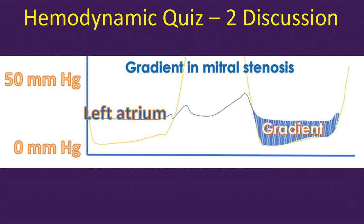Most often, instead of left atrial pressure tracing, pulmonary artery wedge tracings were used as a surrogate of left atrial pressure. But a delay in transmission with phase shift could overestimate the transmitral gradient in that case.